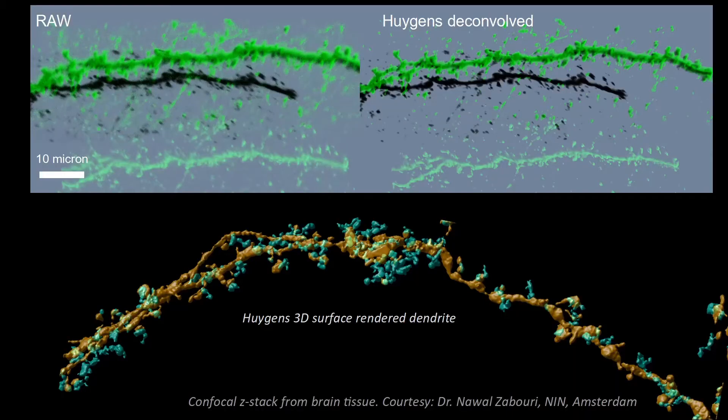Here the top left shows a raw confocal image of brain tissue which includes a neuron. On the right its deconvolved counterpart, which permits correct surface rendering as shown below. The version below is ready to be analyzed for dendritic spine structure.